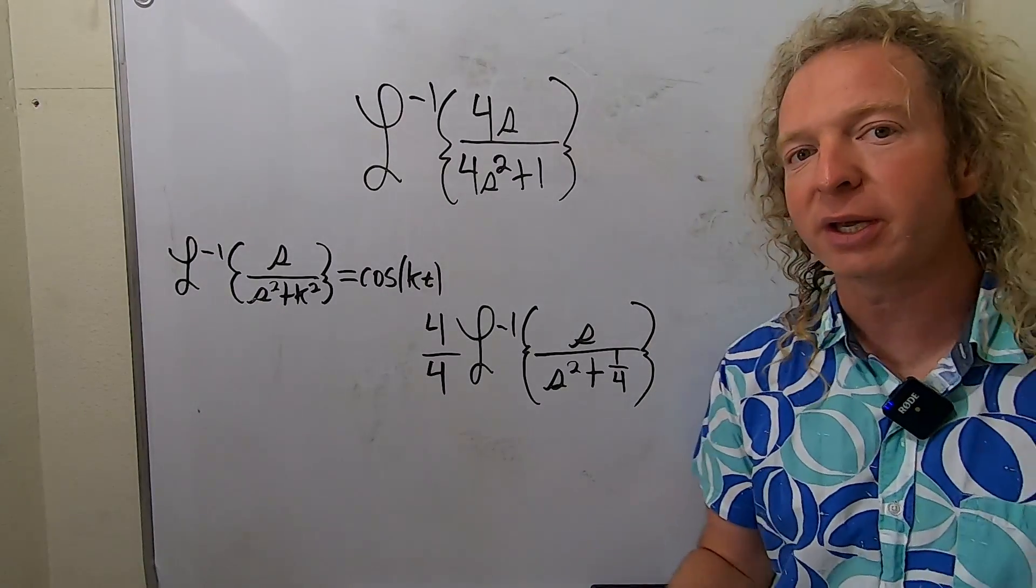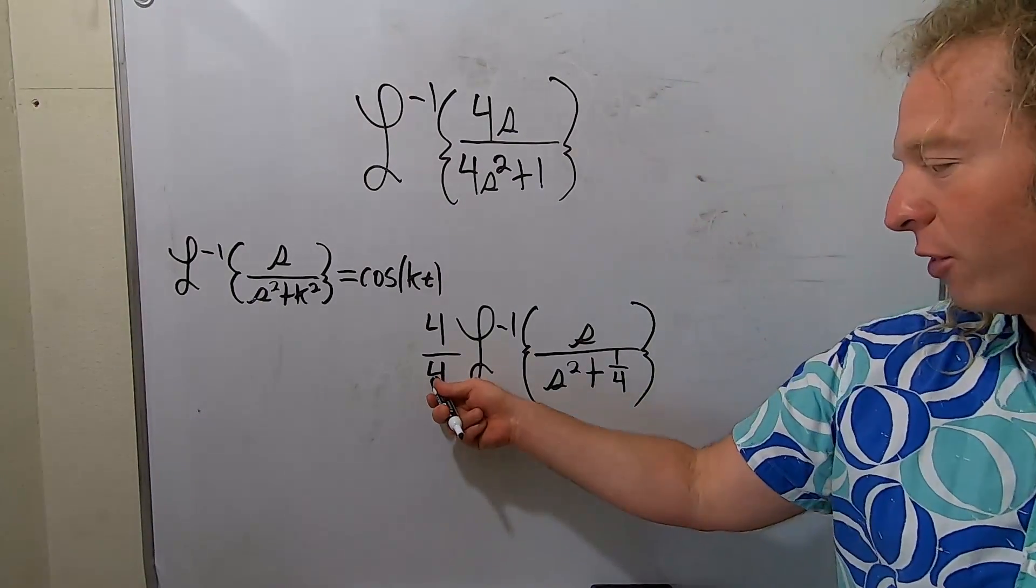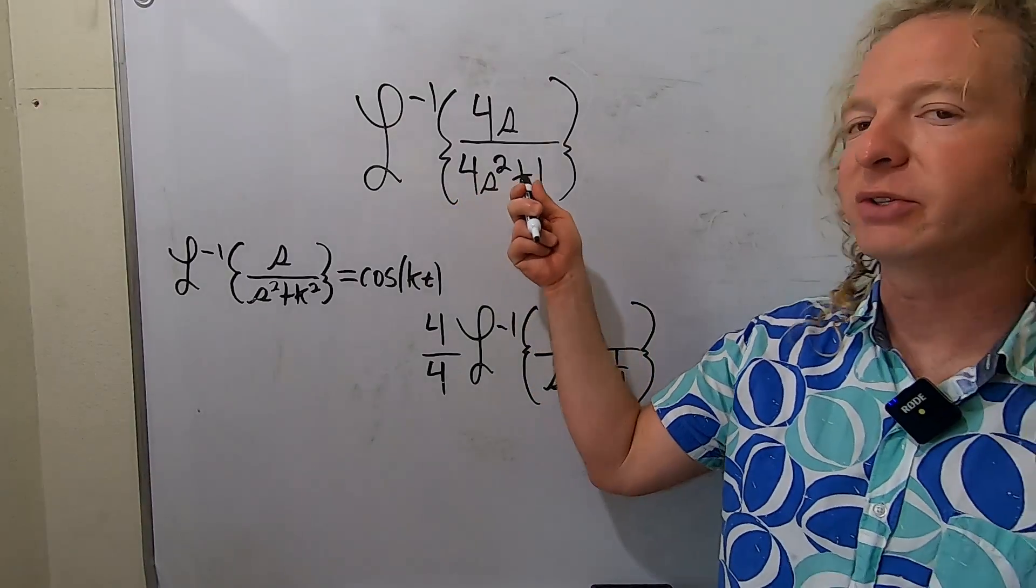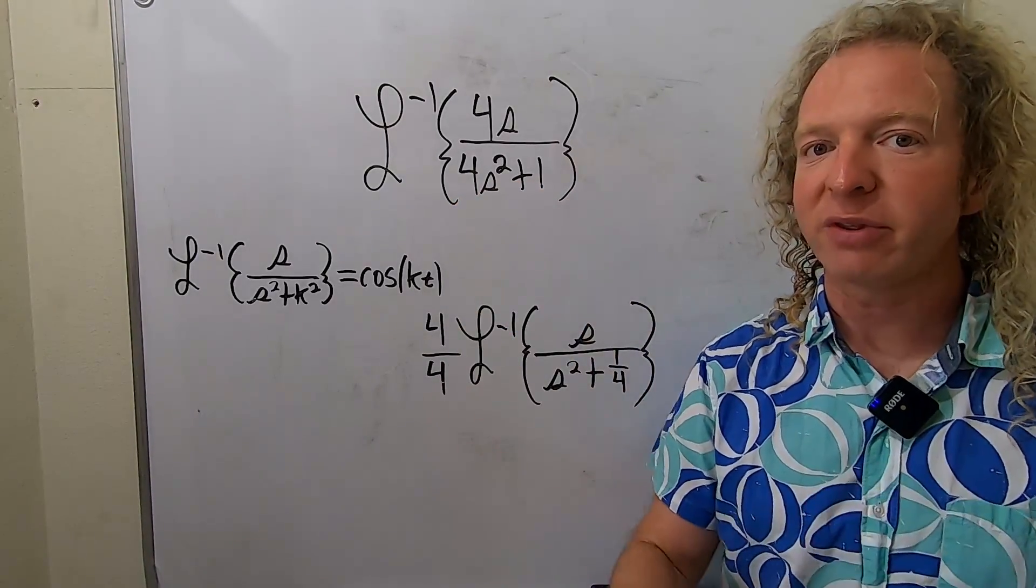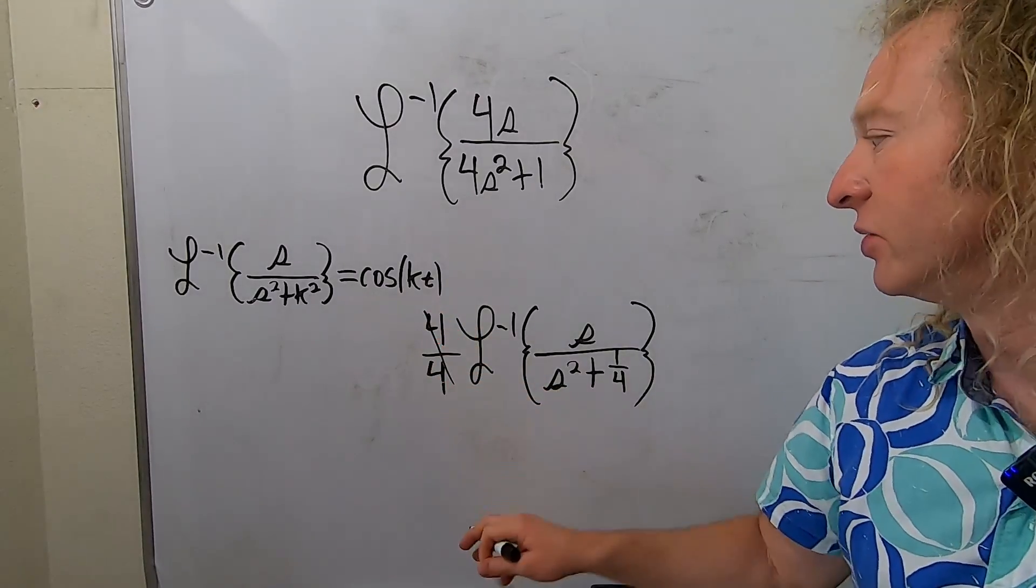And you can check this by working backwards. 4 times s squared is 4s squared. 4 times 1 fourth is 1. So everything is 100% awesome. So this is going to cancel.